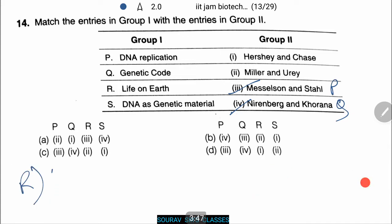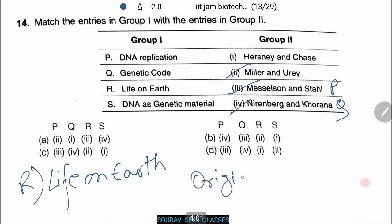R — origin of life on earth — was put forward by Stanley Miller and Harold Urey, whose experiment provided the theory for the origin of life on earth.